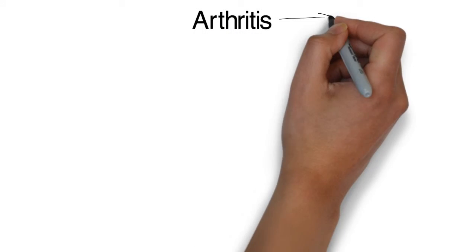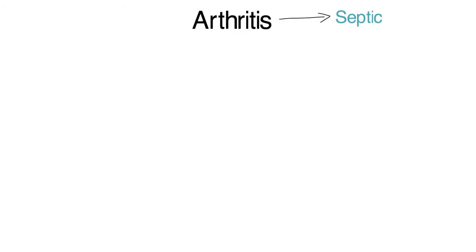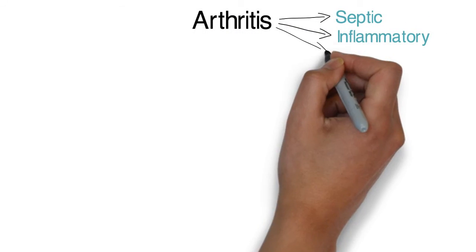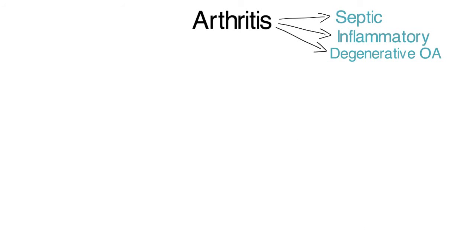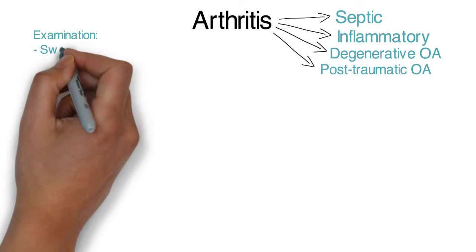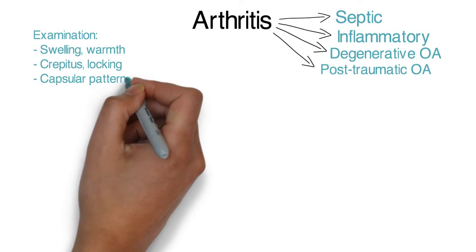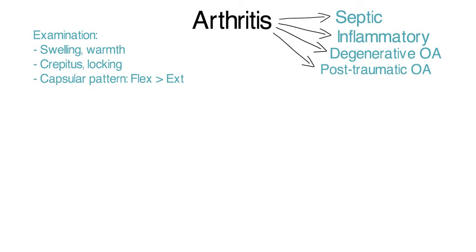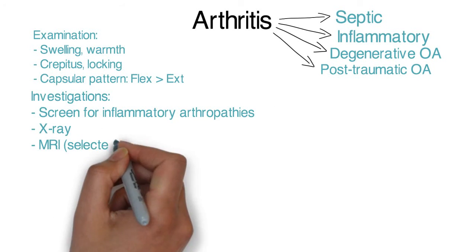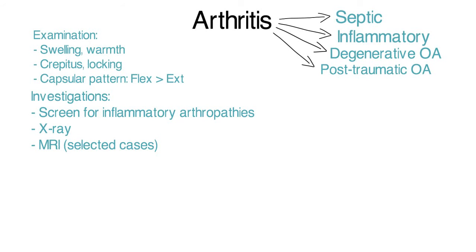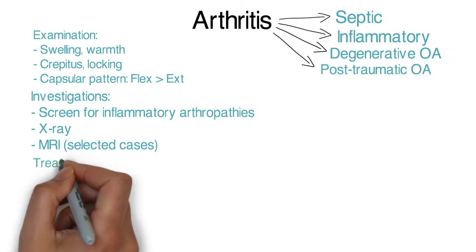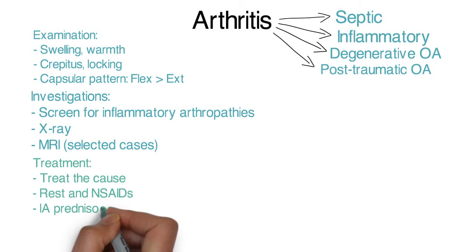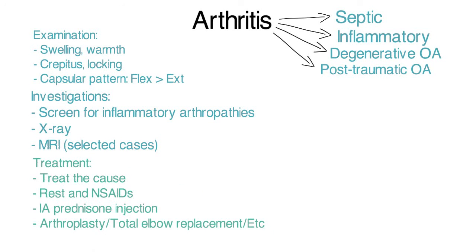Arthritis can be divided into septic, inflammatory, degenerative osteoarthritis and post-traumatic osteoarthritis. On examination, you will find signs of inflammation, crepitus, locking and a capsular pattern. Investigations include screening for inflammatory arthropathies and imaging. Treatment includes treating the cause and symptomatic relief.